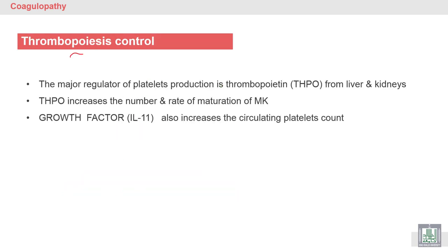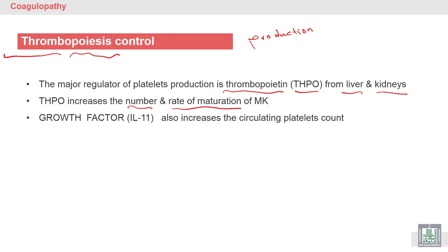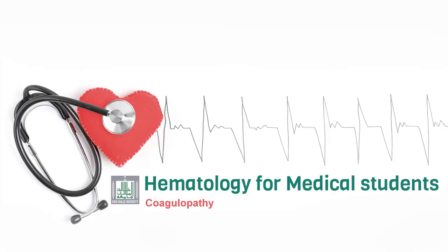Thrombopoiesis means the production of platelets. Thrombopoiesis is under the control of a hormone called thrombopoietin, which arises mainly from the liver and the kidney. Thrombopoietin increases the number and rate of maturation of the megakaryocytes, which are the mother cells for the platelet. Also, thrombopoiesis — the production of platelets — is under the control of a growth factor called interleukin, which is a very important growth factor for the production of platelets.